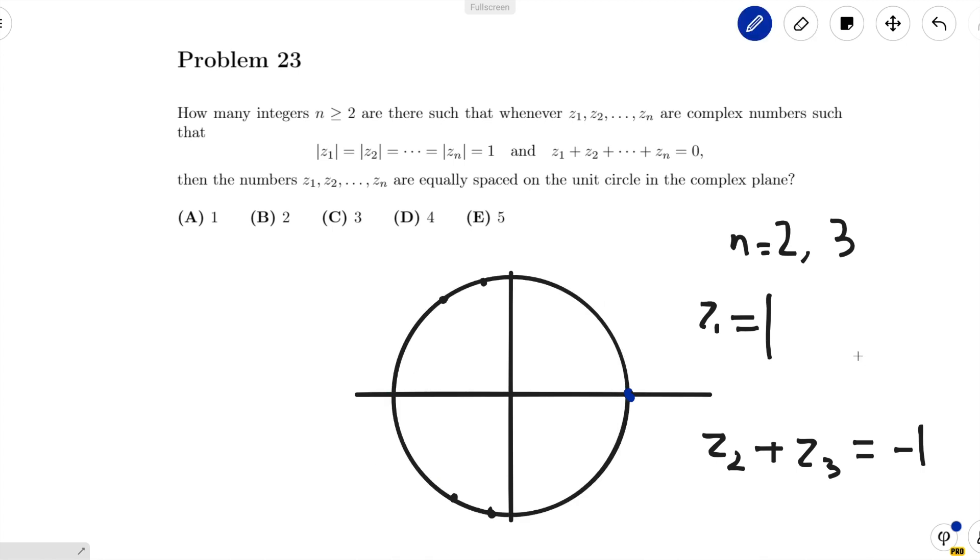But what about the odd n? Now for n equals 5, what we can do is put z₁ at the same place, z₂ at the x-coordinate equals negative 1 half, and z₃ at the x-coordinate equals negative 1 half, but on the negative side.